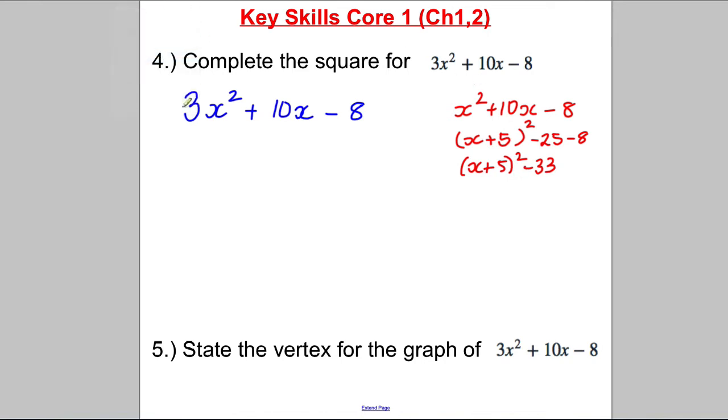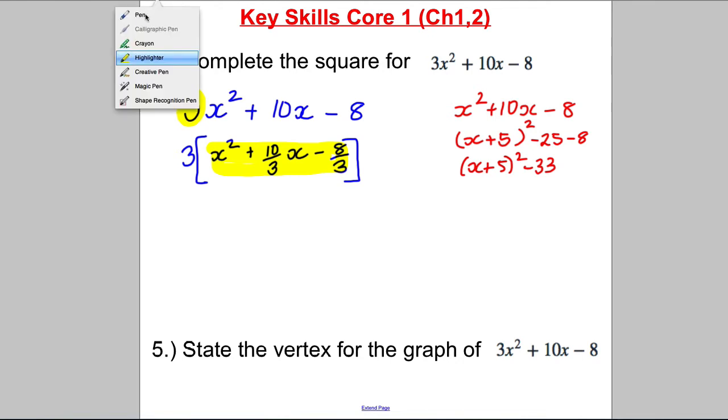Now the problem with this one the slight difficulty is the coefficient in front of the x squared. It's 3. It's not 1. So it makes our life one step more complicated. First thing you do is you factor out or factorize a 3 from each term so that it looks inside like a nice just 1x squared. So take out a factor of 3 put a nice big square brackets there. 3x squared divided by 3 is x squared. 10x divided by 3 is 10 thirds x and negative 8 divided by 3 is negative 8 over 3.